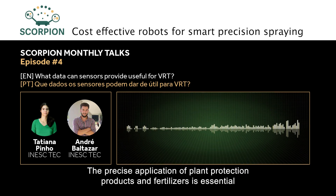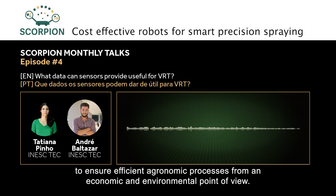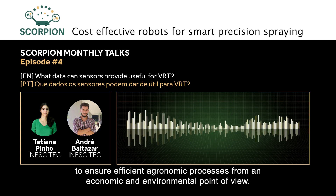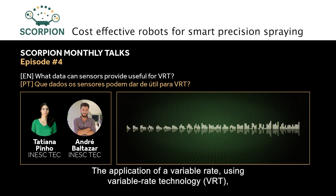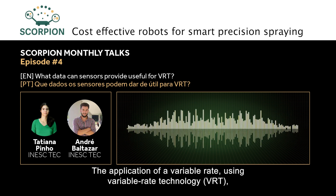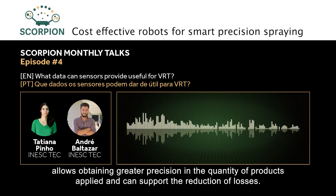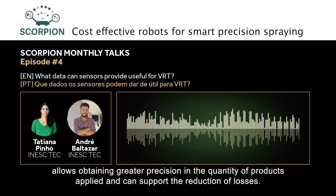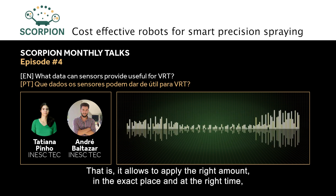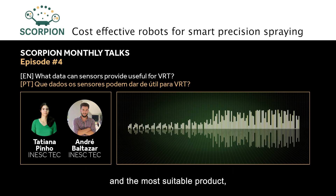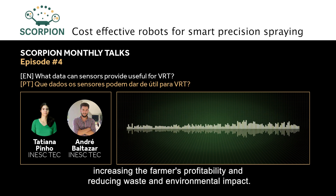The application of pharmaceutical products and fertilizers is fundamental to ensure economic and efficient processes. Using Variable Rate Technology, designated as VRT, allows for greater precision in the quantity of products applied and can support the reduction of losses — applying the right quantity at the exact location and at the right moment, increasing farmer profitability and reducing waste and environmental impact.